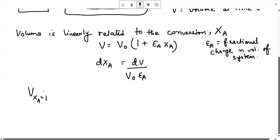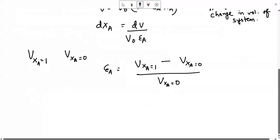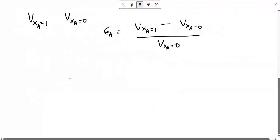If you want to find a relation between the volume when conversion is equal to 1 and the volume when there is no conversion at all, then you can simply write epsilon A equals to V(XA=1) minus V(XA=0) by V(XA=0). So this again simply restates that linear relationship between the volume and the conversion. Sometimes questions are asked on this basis.